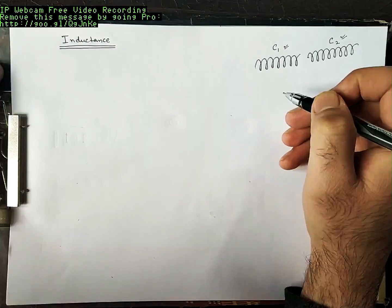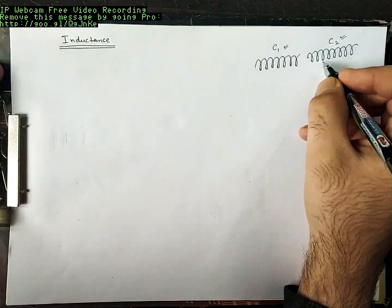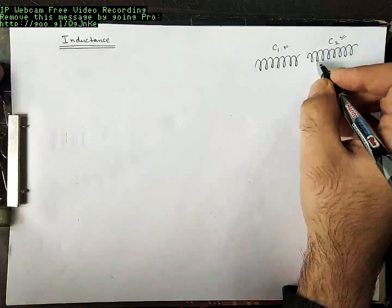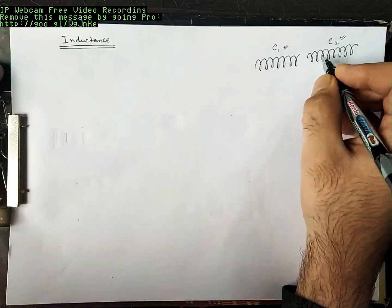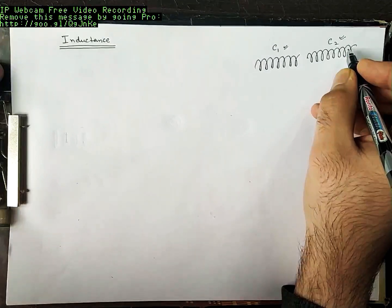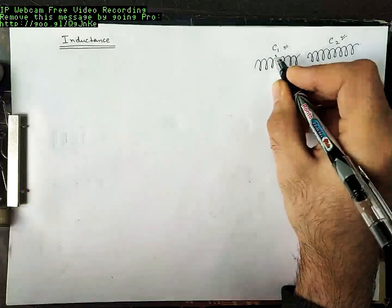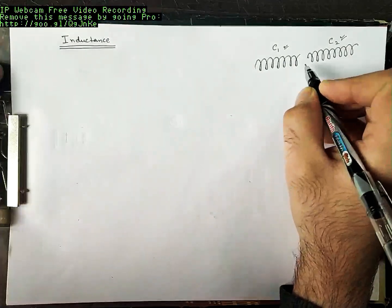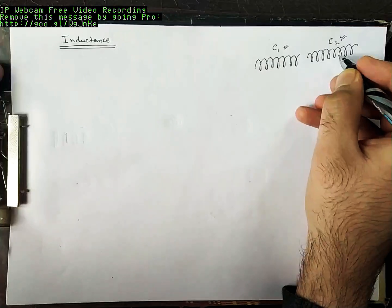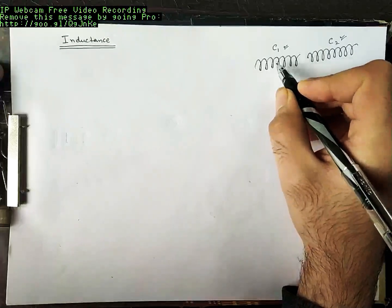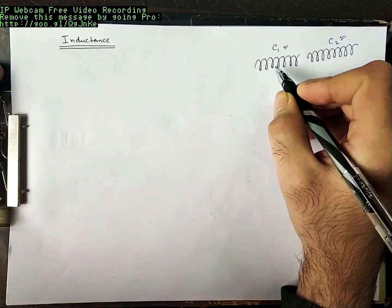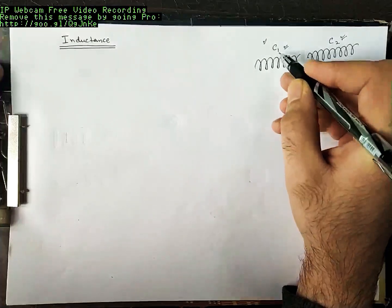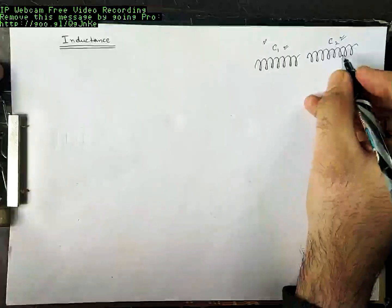What I mean to say is: if the current through coil C2 is changing, because of that change in current the flux produced by coil C2 is changing. And because a part of the flux produced by C2 is also linked to coil C1, the flux through C1 is also changing. So there will be an induced voltage in coil C1 because of the change in current through coil C2.